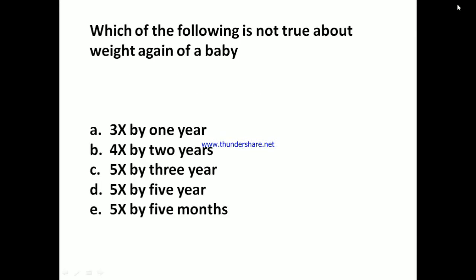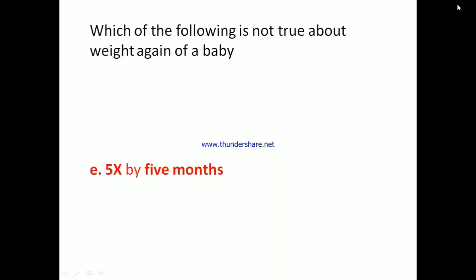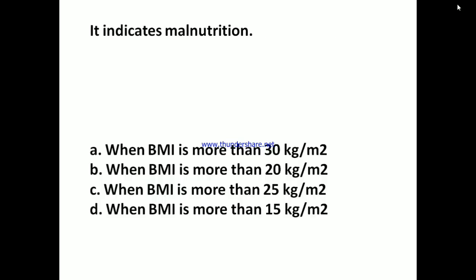Growth and development. Which of the following is not true about weight gain of a baby? Options: 3x by 1 year, 4x by 2 years, 5x by 3 years, 5x by 5 years, or 5x by 5 months. The answer is E: 5x by 5 months.